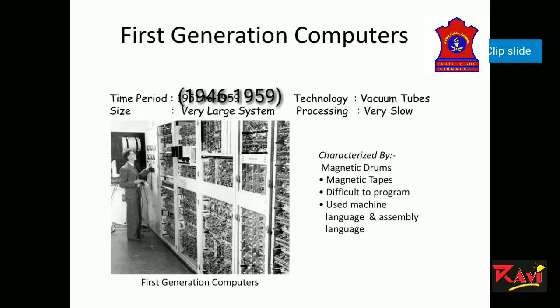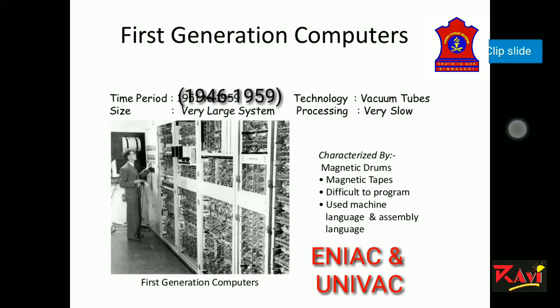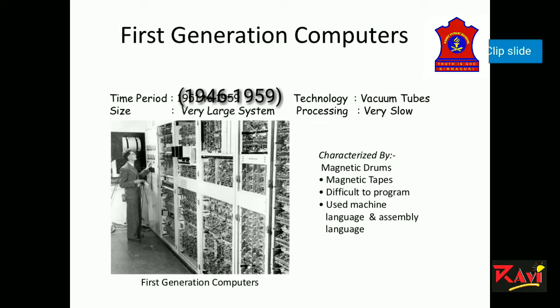The first generation computer was very big in size. The operating speed was very slow, and they were very expensive. They used a device called vacuum tubes. Examples of first generation computers are ENIAC and UNIVAC. A few drawbacks were: they produced a lot of heat, they were not reliable, and they used machine language, which is a low level programming language.